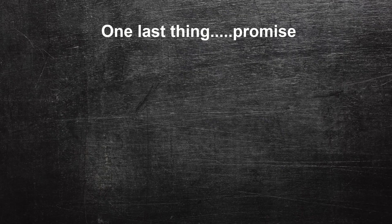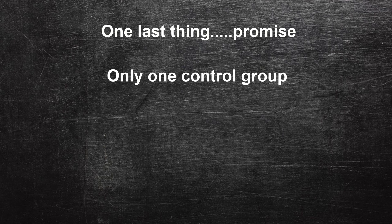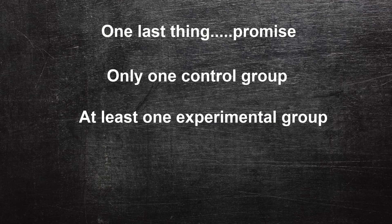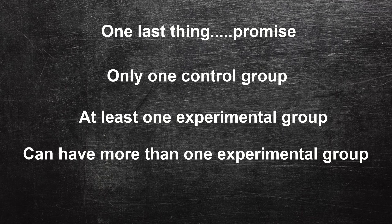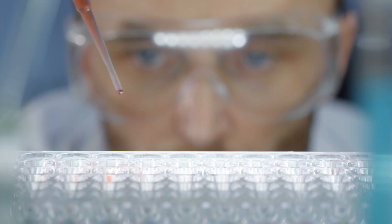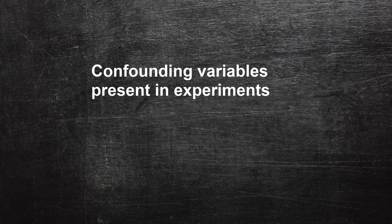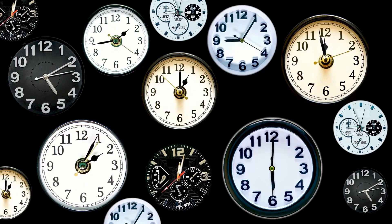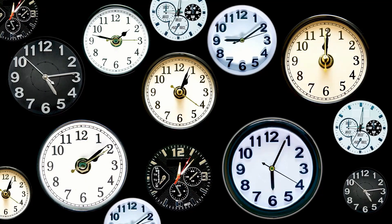One last thing to keep in mind: you will always have just one control group in any experiment. You must also have at least one experimental group, but you can have more than one. This is actually pretty common for pharmaceutical experiments, where one experimental group might get a lower dose of a medicine and another gets a higher dose. Just like with correlational studies, confounding variables can always interfere with results, and experiments usually need to be replicated many times and show consistent results in order to be considered valid.